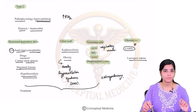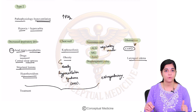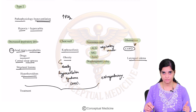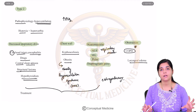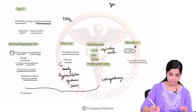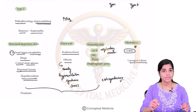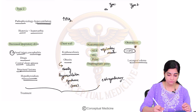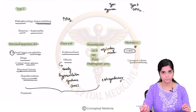The characteristic feature of type 2 respiratory failure is hypoxia with hypercarbia. Clinically, how do you differentiate type 1 versus type 2 respiratory failure? Type 1 has only hypoxia, whereas type 2 has carbon dioxide retention.